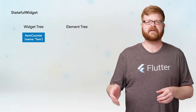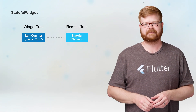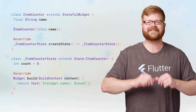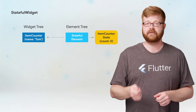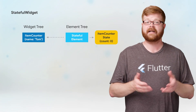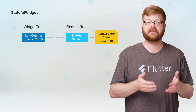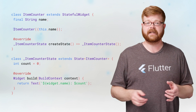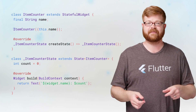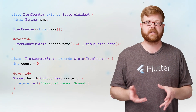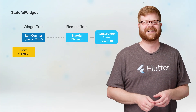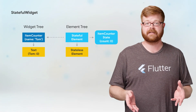With a stateful widget, there's an extra step. Just like before, first comes the widget, but when Flutter asks it to create an element, it returns a stateful element. That stateful element then goes back to the widget and says, hey, can you make a state object for me? Which is what that createState method is for. That method kicks out a new state object, and the element holds onto it. Now it's time to build child widgets, so the stateful element calls the state object's build method. In order to build a text with the correct string, we need the name property from the widget and the count property from the state object. Because the state object maintains a reference to the widget for which it's maintaining state, it can access both values and use them to construct the text widget.